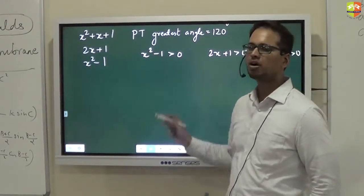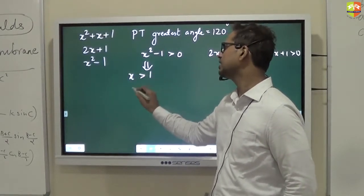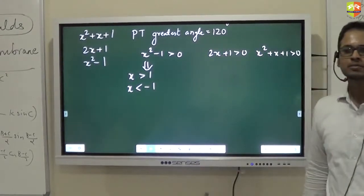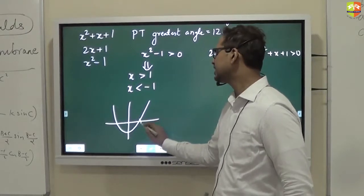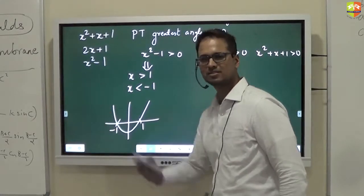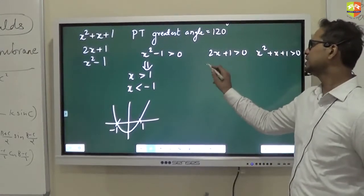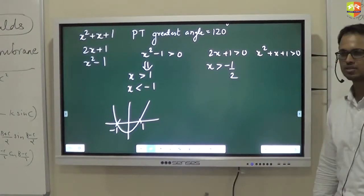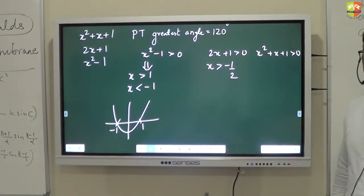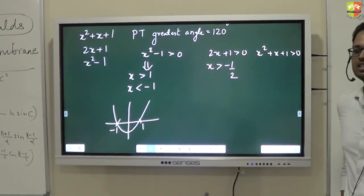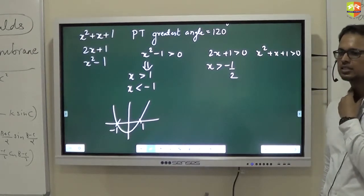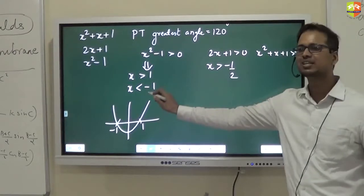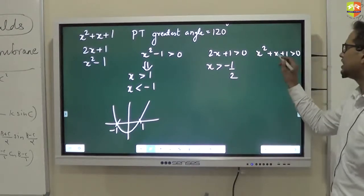If this is positive, it means x should be greater than -½. X cannot be less than -1, because x has to be greater than -½. If x is less than -1, then when you substitute that into 2x + 1, you will get that side as negative. This will tell that x cannot be less than -1. And this is anyways positive.